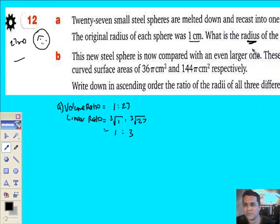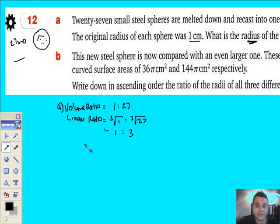So in other words, the radius of the larger one is going to be three times as big as the radius of the little one. Therefore, one centimetre times three is going to be three centimetres radius. And I've done it.